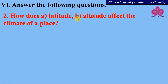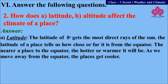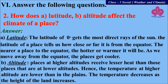Latitude: the latitude of zero degrees gets the most direct rays of the sun. The nearer a place is to the equator, the hotter or warmer it will be. As we move away from the equator, places get cooler. Altitude: places at higher altitude receive lesser heat than those at lower altitude. Hence the temperature at higher altitudes is lower than the plains, and temperature decreases as the height of the land increases.